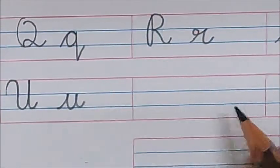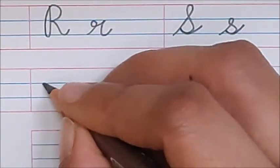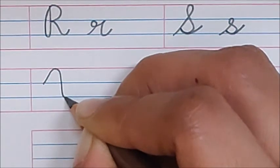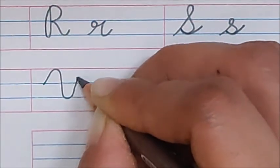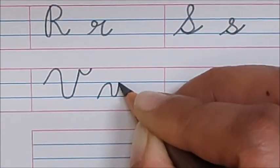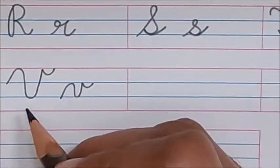What comes after U? V. Write down here V. Go up. Again, turn. Go down. Turn. Go up. And here, make a smiley. Now, write V in lowercase cursive also.